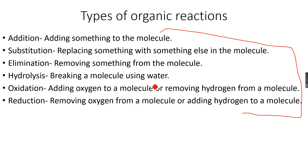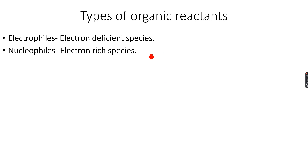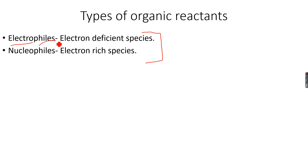Now, types of organic reactants — you need to know these because all our mechanisms will be based on them. There are electrophiles, which are electron-deficient species. 'Electro' refers to electrons and 'phile' means they want electrons — they are hungry for electrons. Nucleophiles, on the other hand, are electron-rich species.